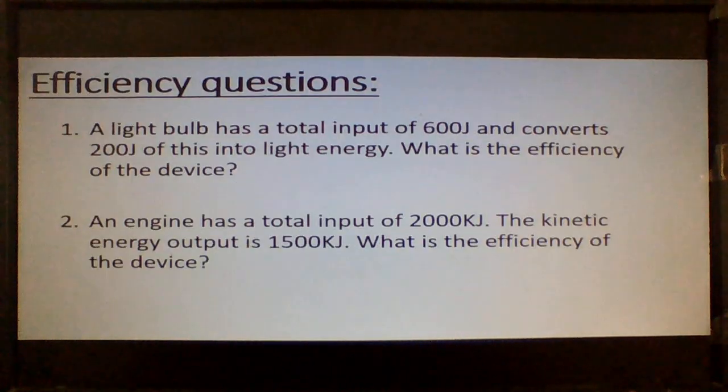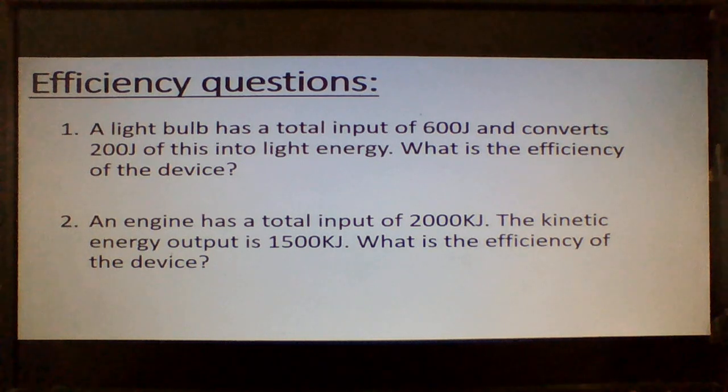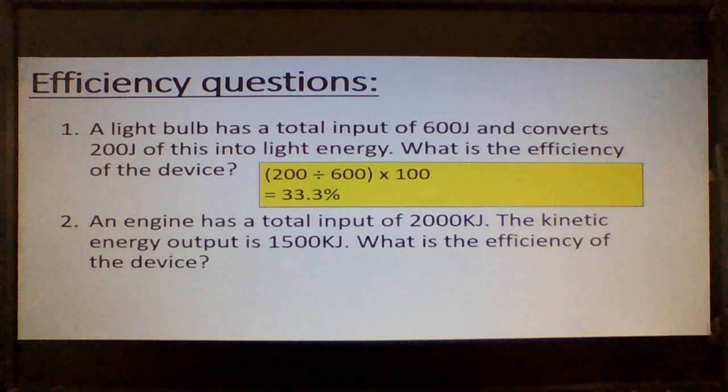So, what a beautiful voice that was. So let's go back to our questions. If the total input is 600 joules and it converts 200 joules into light energy, the efficiency surely is the useful output divided by 100. So we should have done 200 divided by 600 times 100 to get an efficiency of 33.3%.